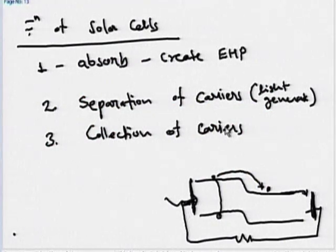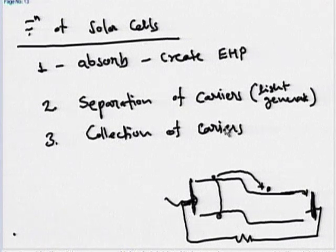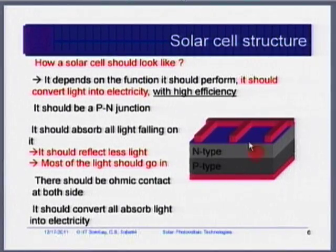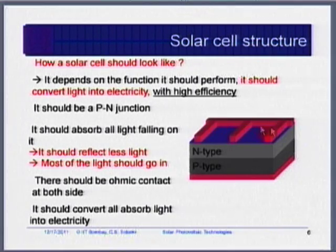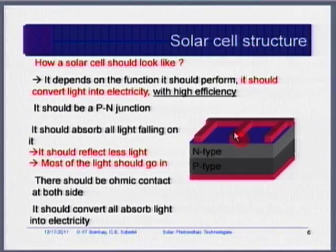We want light to get into the solar cell as much as possible. The front metal contact cannot be continuous because it blocks light — it is made in the form of fingers, thin metal lines. When light falls on a solar cell, current is generated everywhere light falls, so the contact should cover as much area as possible, but since we want light to come in, we make selective contacts.